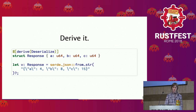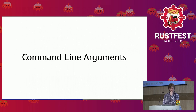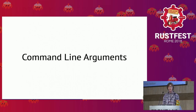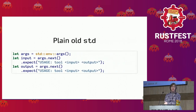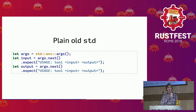A pet peeve of mine this year has been command line applications, so I couldn't go without talking about command line arguments. Imagine a program named 'tool' that takes an input filename and an output filename. Using the standard library, I can say std::env::args and get an iterator over my command line arguments — the first is the input, the next is the output.